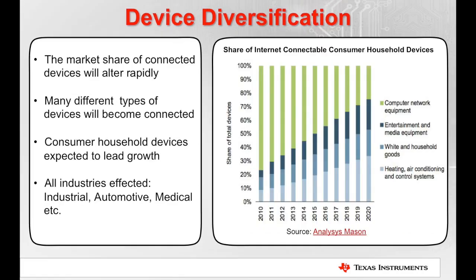Another reason to be interested is device diversification. As the graph on the right shows, no longer will computers, tablets and smartphones be the only connected devices. Many new and different types of devices will become connected — things never even expected or imagined. Household devices will likely lead the way. Think about the Nest thermostat, Philips Hue light bulbs, TVs, stereos and much more. And this change will affect all industries, not just home and consumer items, but industries such as medical, industrial and automotive.